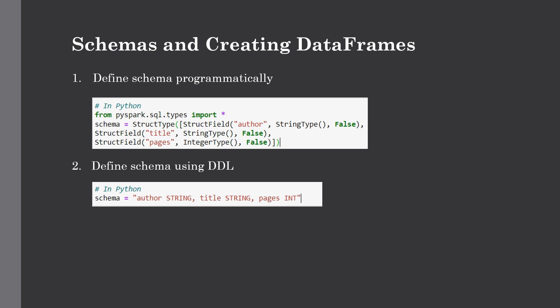There are two ways to define a schema: the programmatic approach or the DDL approach. In the programmatic method, we use the StructType and StructField data types. For example, with three columns — author, title, and pages — the arguments you pass are the column name, the field type such as StringType, and whether the field is nullable. For pages we use IntegerType. This is the same approach we used in our last lecture to programmatically provide a schema to our headerless CSV file.